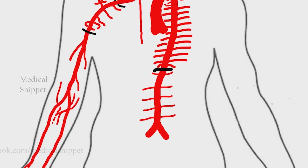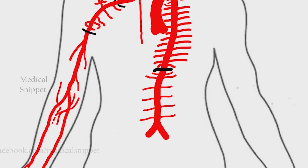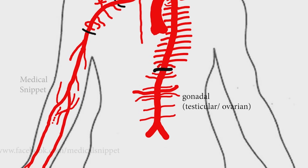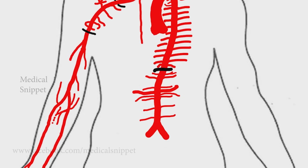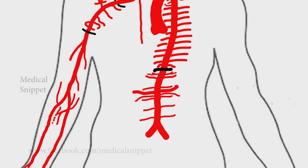Next we'll see the three paired lateral visceral branches: the middle suprarenal artery, renal artery, and gonadal arteries — testicular arteries in males and ovarian arteries in females. The inferior phrenic artery gives rise to the superior suprarenal artery, and the renal artery gives rise to the inferior suprarenal arteries.